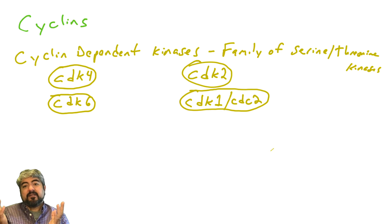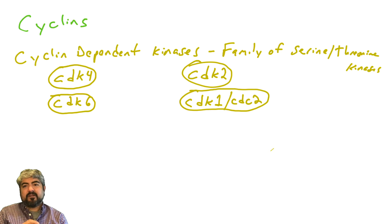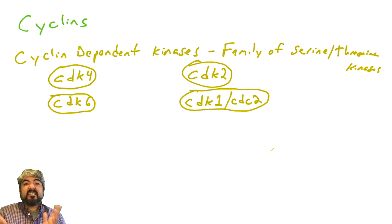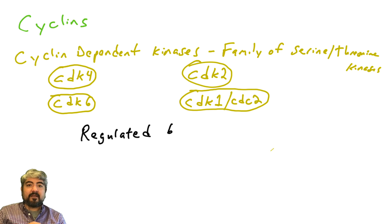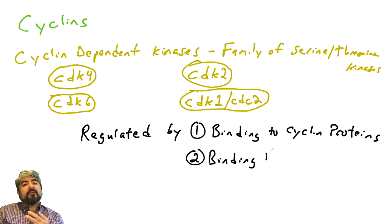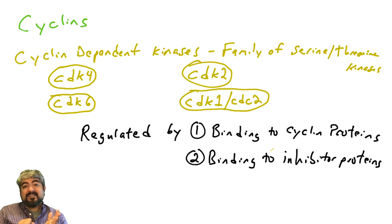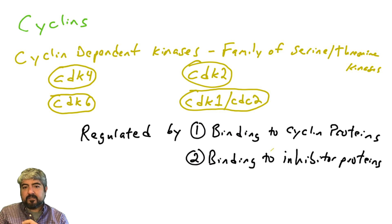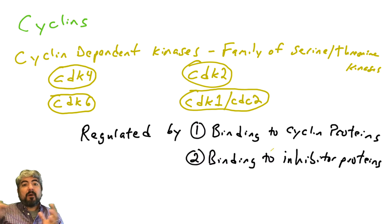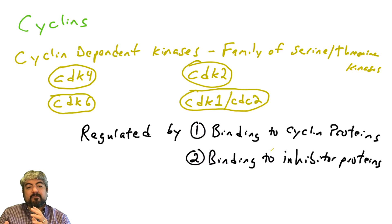These are all serine-threonine kinases, and as discussed in previous videos, kinases are highly regulated enzymes — they're not always phosphorylating; their activity is regulated. They might be inactive, and then they might be active. Cyclin-dependent kinases are regulated by many different things, but the two main regulators are: binding by cyclin proteins, which activates them — hence the name cyclin-dependent kinases — and another set of proteins called CDK inhibitors, or CDKIs, which bind to and inhibit them. So these kinases are highly regulated by protein-protein interactions.